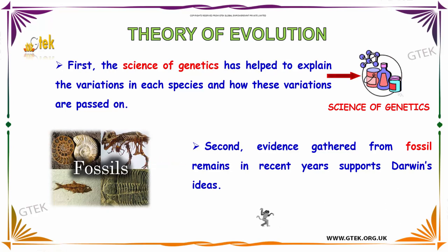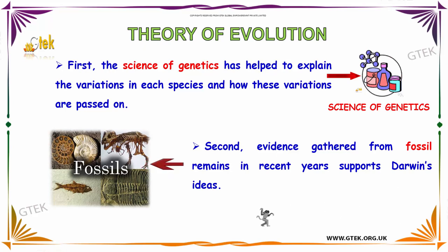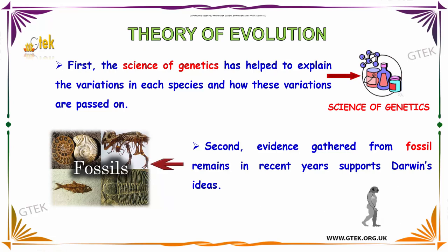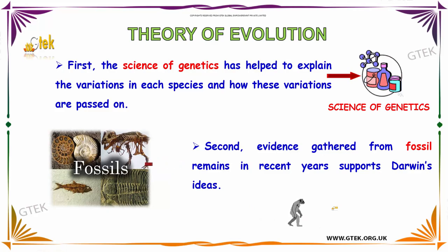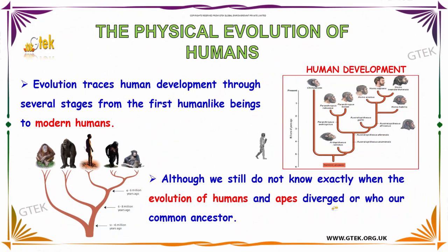The theory of evolution has two stages. The first is the science of genetics, which has helped to explain the variation in each species and how these variations are passed down. The second stage is the evidence gathered from fossil remains in recent years that supports Darwin's ideas.